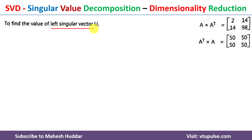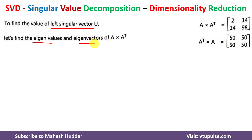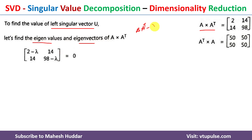Once we have A×Aᵀ and Aᵀ×A, the next step is to calculate the left singular vector U. To calculate U we need the eigenvalues and eigenvectors of A×Aᵀ. The eigenvalue equation is: det(A×Aᵀ − λI) = 0, where I is the identity matrix. Substituting the known values and simplifying gives the matrix [2−λ, 14; 14, 98−λ] = 0.